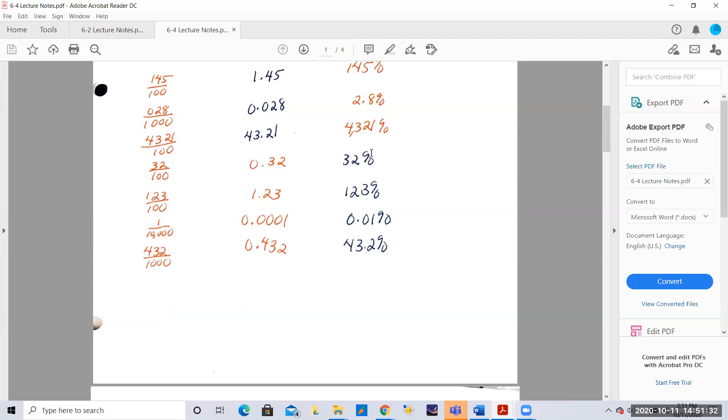Now 32 percent is 32 hundredths, 123 hundredths or 123 percent. That is one ten thousandth or 0.01 percent. And that is 43.2 hundredths or 43.2 percent, 432 thousandths.